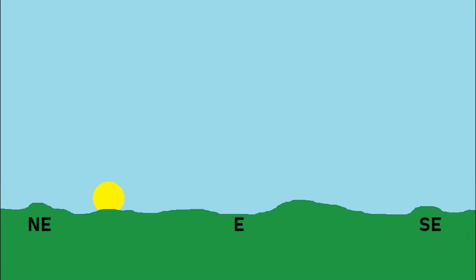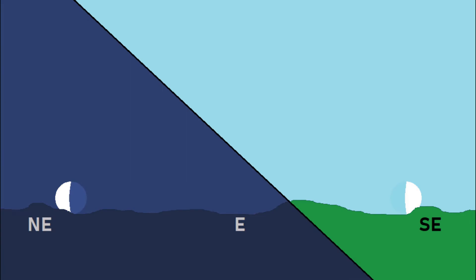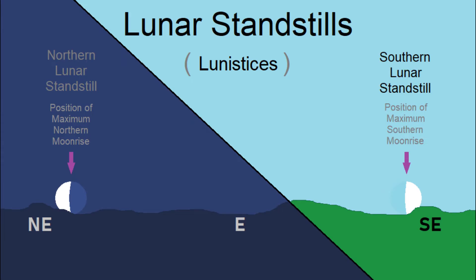These slowing and stopping events for the Sun are called solstices, from the Latin for sun and standstill, and the corresponding monthly positions for the Moon can be referred to as lunistices, or more commonly, as lunar standstills. There is a northern standstill when the Moon is rising and setting at a maximum point towards the north, and a southern standstill when it is rising and setting towards the south.